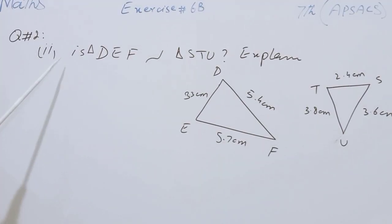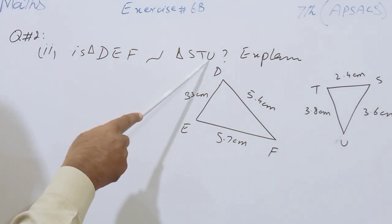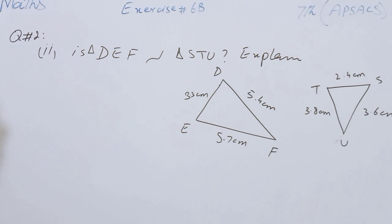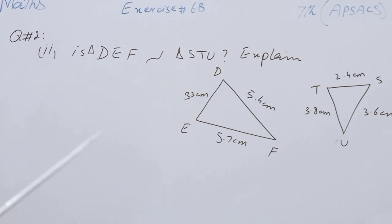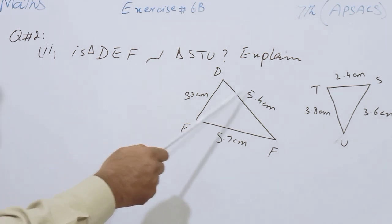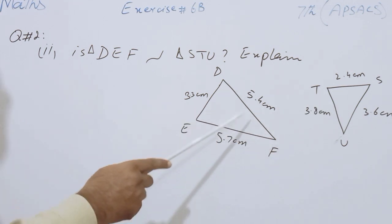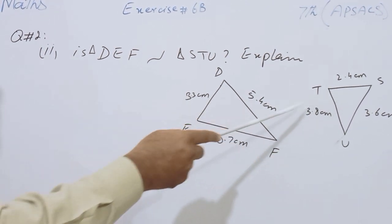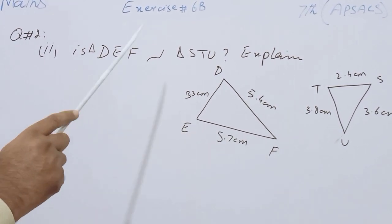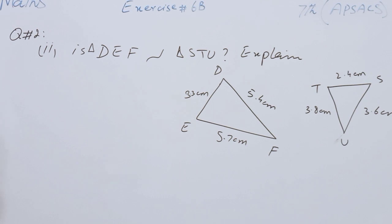The second part of question number 2 is: is Triangle DEF similar to Triangle STU? Explain whether they are similar or not. In my very first lecture of this chapter I explained that two triangles or two figures will be similar if their corresponding angles are equal and their corresponding sides are proportional, or the corresponding sides have the same ratio. Now we will find the ratio of the corresponding sides; if the ratios are equal the triangles will be similar, otherwise not. Angles are not given, so we just find the ratios of the corresponding sides.